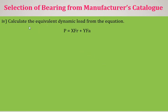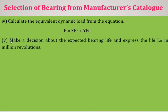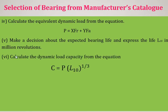Step number 4: calculate the equivalent dynamic load P using P = X·FR + Y·FA, with FR, FA, X, and Y all determined. Step number 5: decide on the expected bearing life and express it in million revolutions. If life is given in hours, convert it using L10 = 60·N·L10H / 10^6 so we can apply the load-life relationship. Step 6: calculate the dynamic load carrying capacity C using C = P × L10^(1/3).